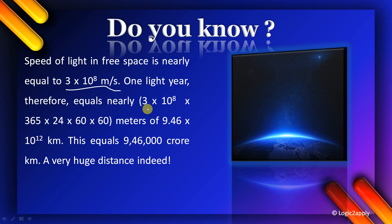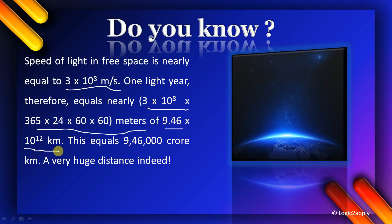One light year therefore equals the distance light travels in one year. In meters, it is given in the bracket value, and in kilometers it is 9.46 × 10¹² km — approximately 9 lakh 46 thousand crore kilometers. This is a very huge distance indeed.